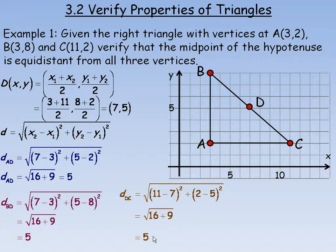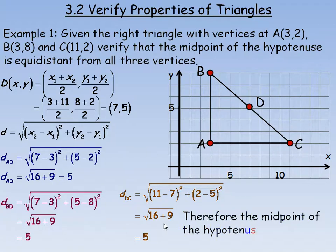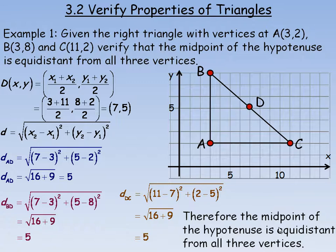So all three distances are 5. We can conclude therefore that the midpoint of the hypotenuse in this right triangle is equidistant from all three vertices — all three corners of the triangle.